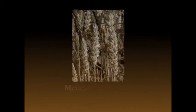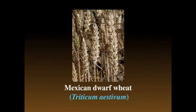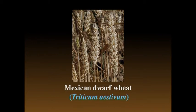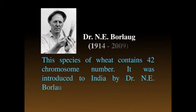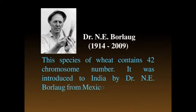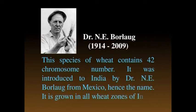Number four is Mexican dwarf wheat, Triticum aestivum, which contains 42 chromosomes. It was introduced to India by Dr. Norman Borlaug from Mexico, hence the name. It is grown in old wheat zones of India.